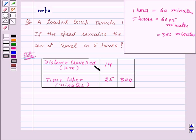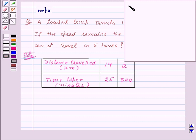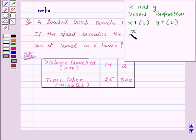Let us assume that the distance traveled is a kilometers. Recall that two quantities x and y are said to be in direct proportion if an increase or decrease in x is followed by an increase or decrease in y in such a manner that the ratio x upon y remains constant and positive.